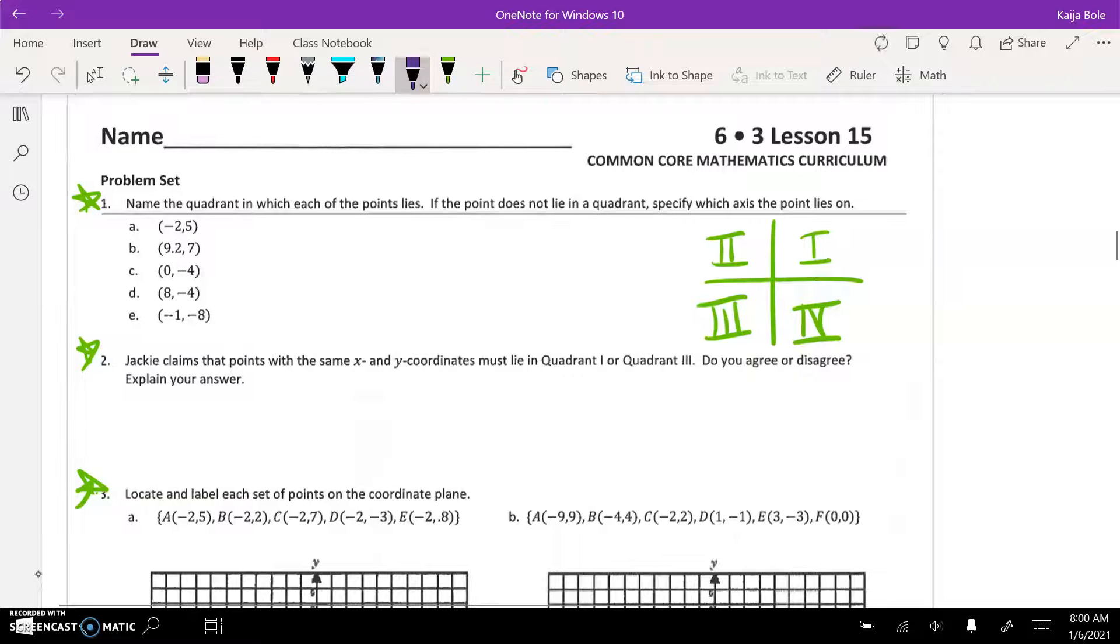Okay, the tricky one is like Part C. Part C, zero negative 4, would be technically down here, I put a purple dot. Okay, so it's not in a quadrant but it's on an axis. So your answer here would be the y-axis.